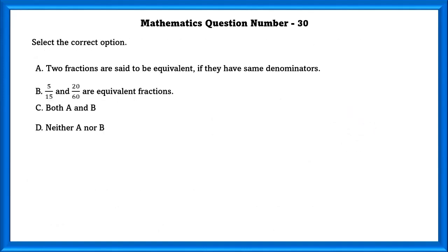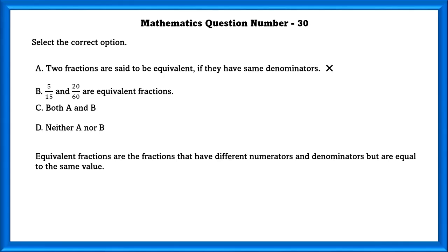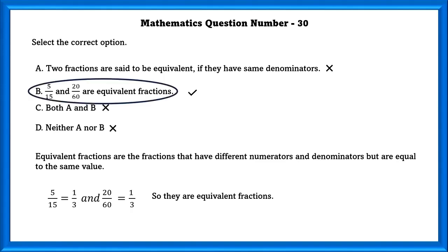Mathematics question number 30. Select the correct option. A. Two fractions are said to be equivalent if they have the same denominators. No. If they have the same denominators it is called a like fraction. Equivalent fractions are the fractions that have different numerators and denominators but are equal to the same value. B. 5 by 15 and 20 by 60 are equivalent fraction. Yes that is true. If we divide the numerator and denominator by 5 we will get 1 by 3. For 20 by 60 if we divide the numerator and denominator by 20 we will get 1 by 3. So these are equal in fraction. So the answer is B.